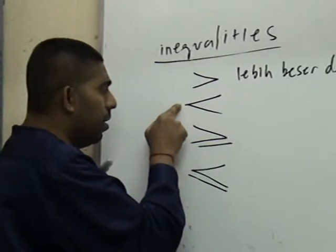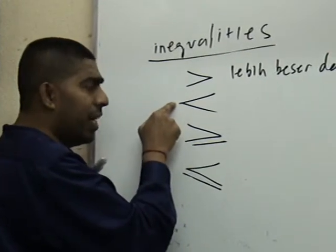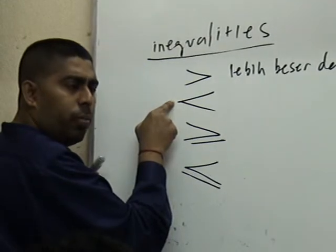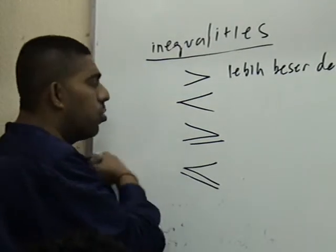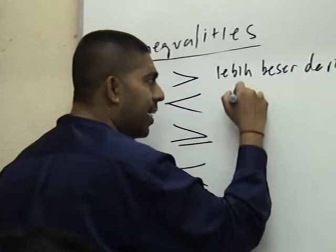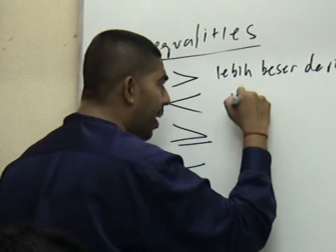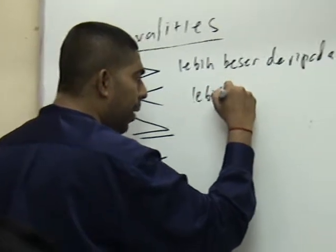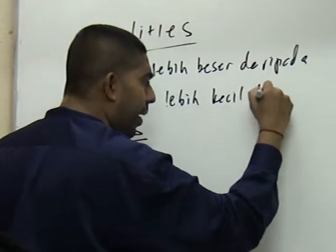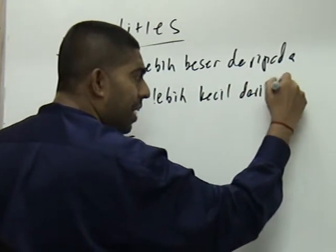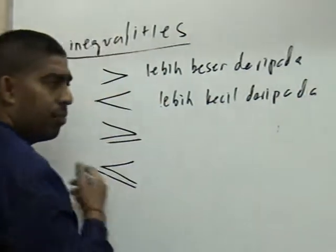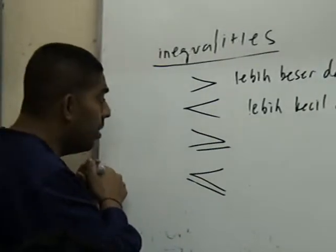Yang ni nampak tak? Mulutnya kecil. So ini dipanggil lebih kecil daripada. Less than.